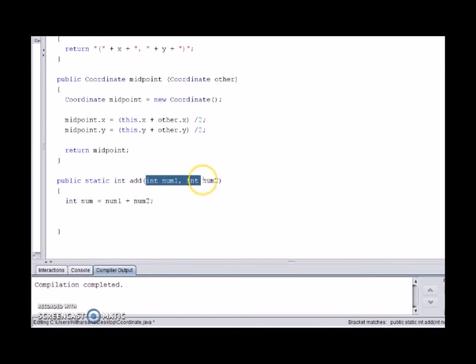We can show how these methods work and how they are called in the interactions panel or you can do it in another class. But for now, we will show you in an interactions panel. There is a specific difference between the way you invoke or call an instance method and a class method.